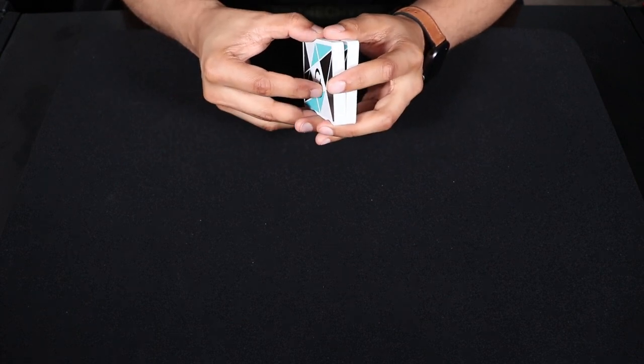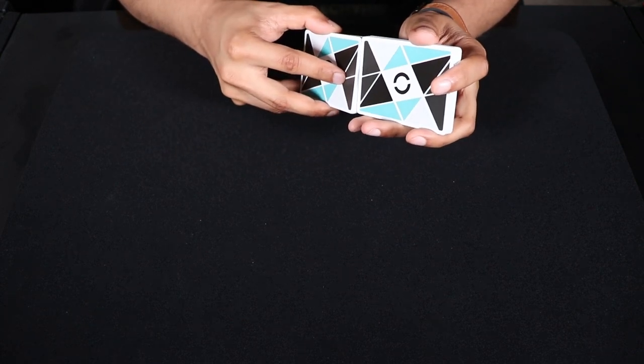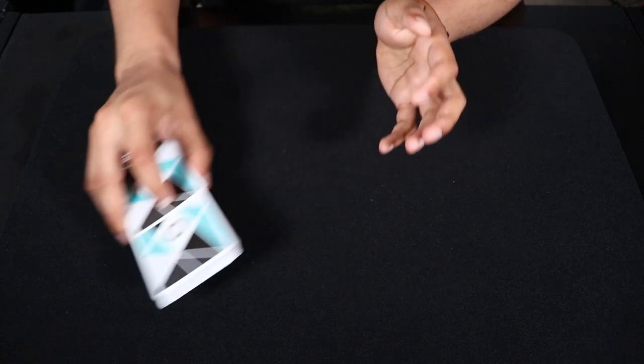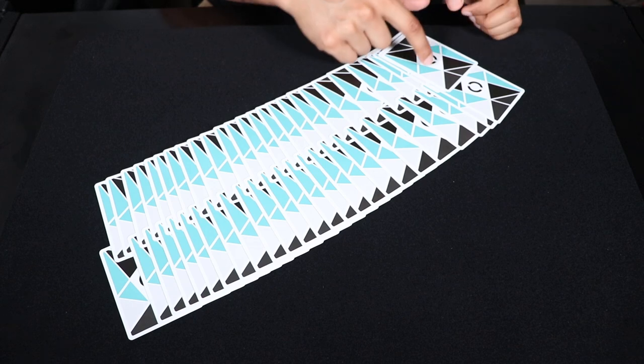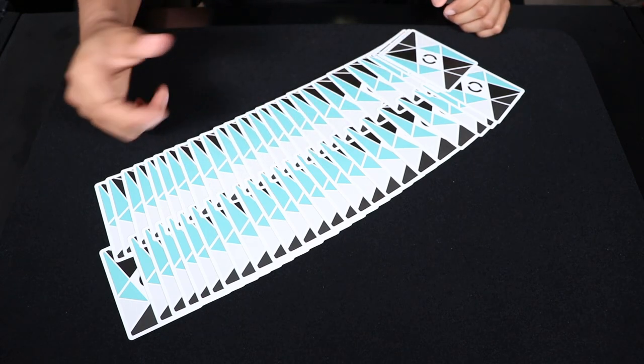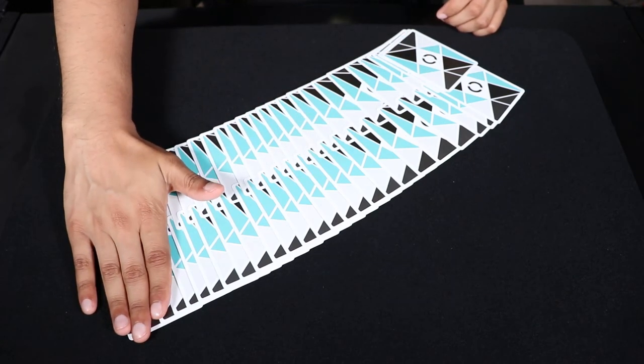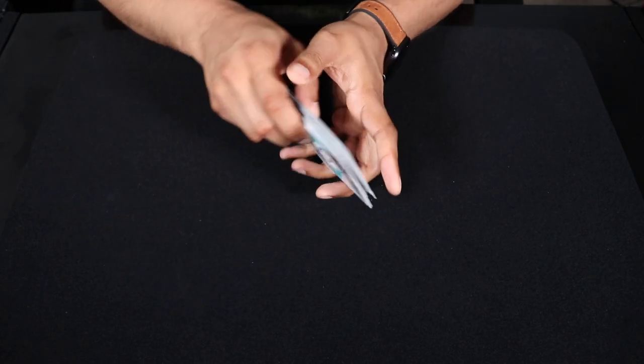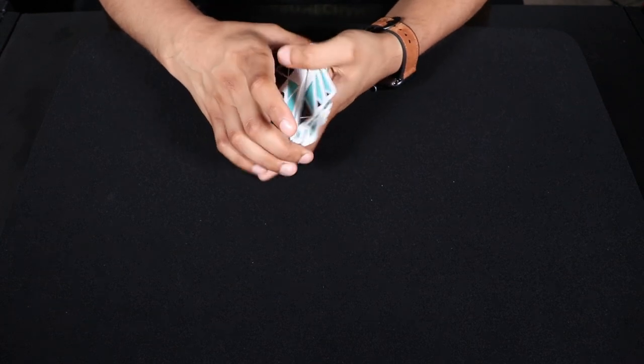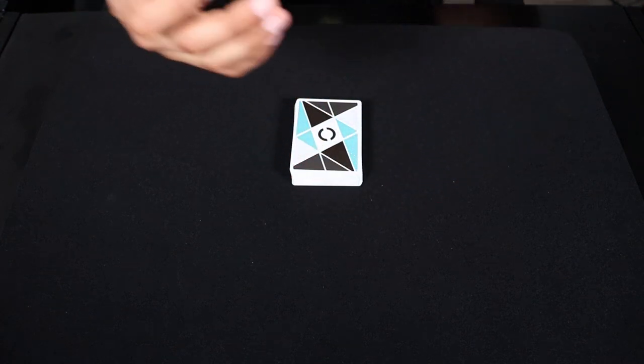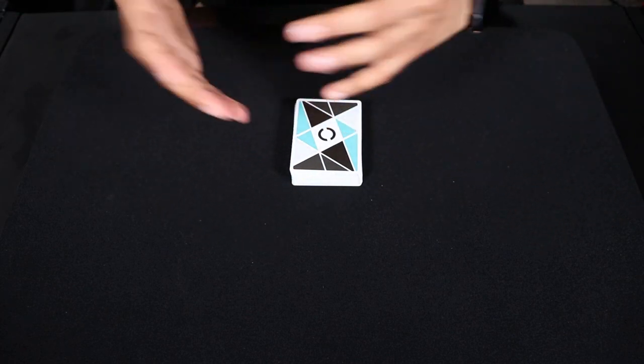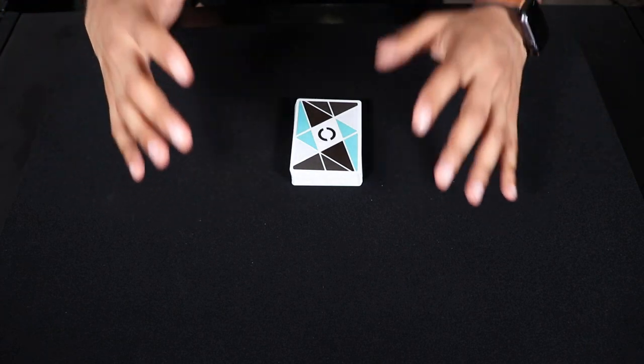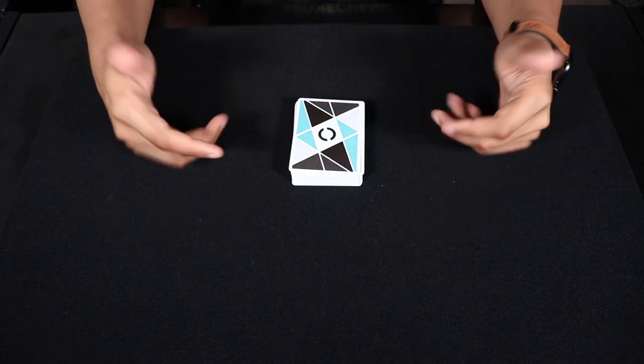Now for those of you who don't know, the Faro Shuffle is actually used to interweave cards perfectly in a 1 to 1 ratio. So it looks a little something like this. As you can see the cards are woven perfectly in a 1 to 1 ratio. And there's just so many cool techniques you can do with this. Whether it be crazy shuffles, to card tricks, to flourishes, to cardistry. So it has so many uses and so many amazing things that you can do with it. Let's just get into how it's done.